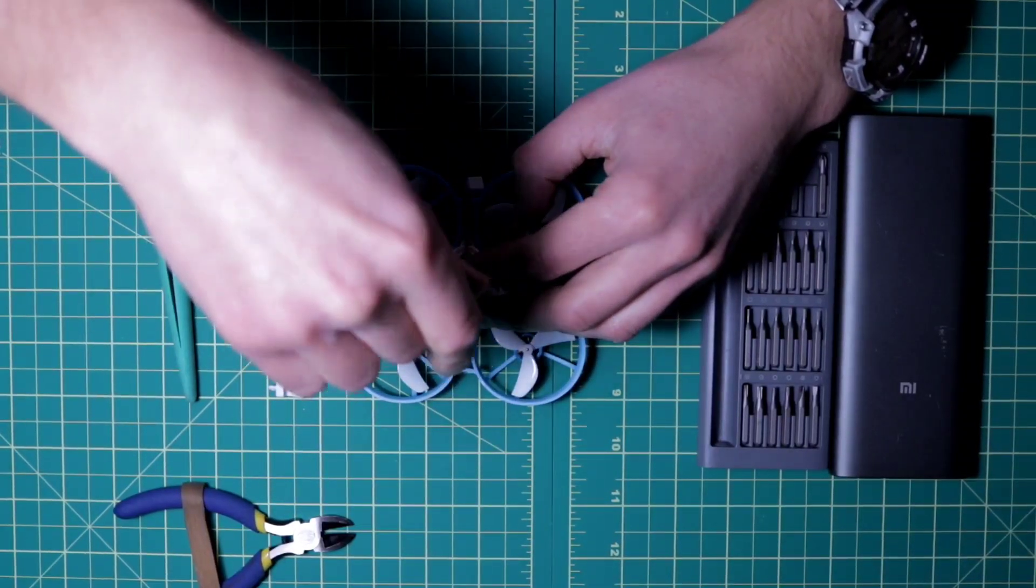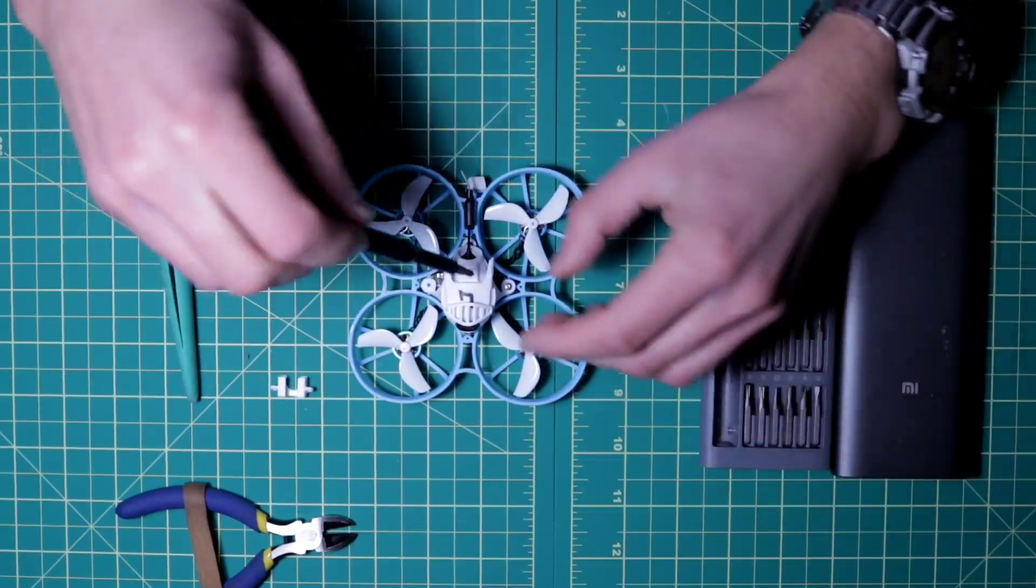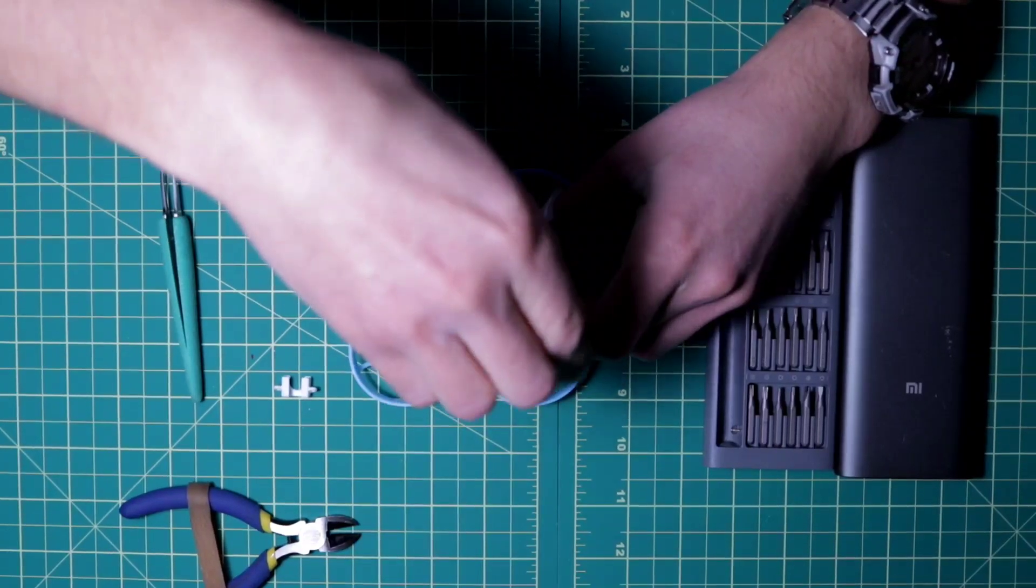We have three screws. That's why let's unscrew it one by one. We have the first one. Don't lose it. Put it in the box where you can find it later. Then the second one.